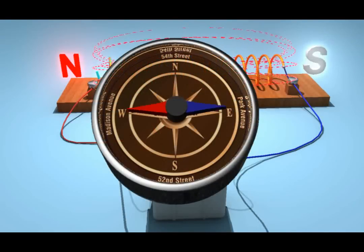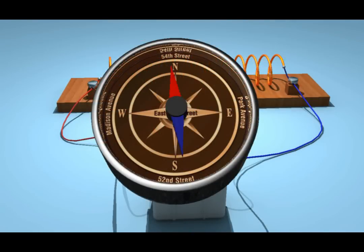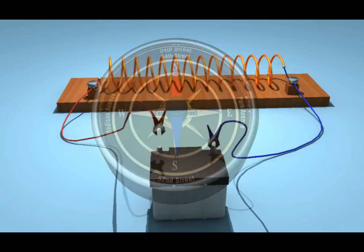If we suspend this current-carrying solenoid freely, it rests pointing north and south, just like the suspended magnetic bar does.